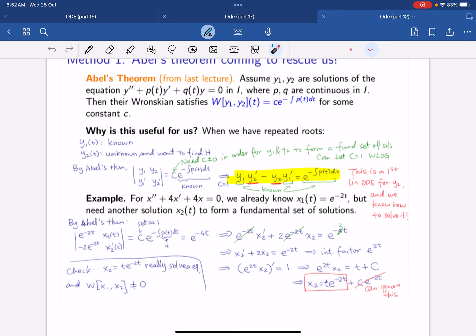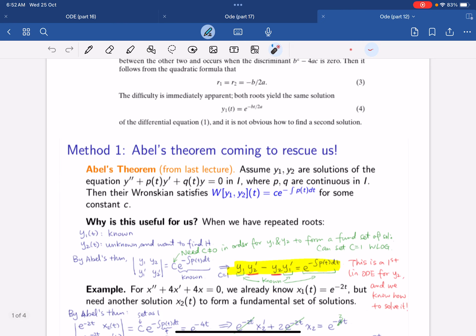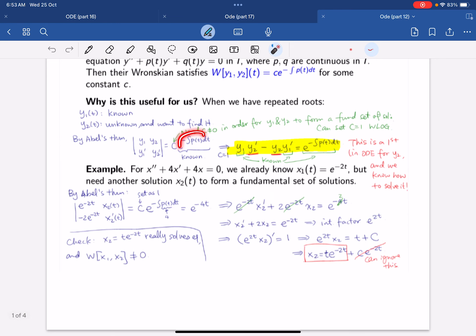By Abel's theorem we find that the Wronskian, which is this determinant, must equal to this. We already know how to do this because e to minus integral of pt is known, as pt. So this whole thing is known.